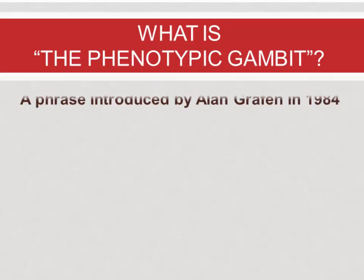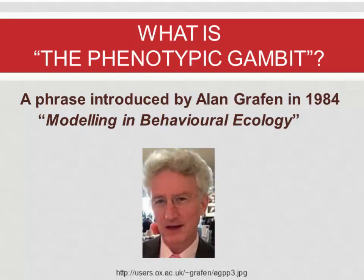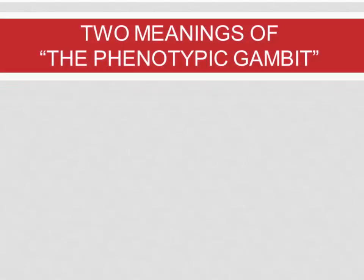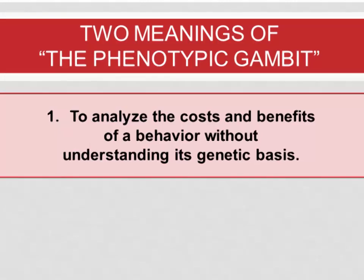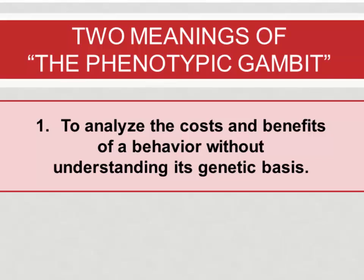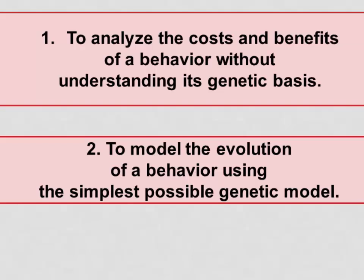So what is the phenotypic gambit? It's a phrase that Alan Graffin introduced in 1984 in an essay called 'Modeling in Behavioral Ecology.' There are two meanings he gives to it. The first is analyzing the costs and benefits of a behavior without understanding its genetic basis — focusing just on the behavior and its outcomes without knowing the genes that cause it, treating genetics as a proximate cause. The second is using the simplest possible genetic models when modeling the evolution of a behavior in order to keep things simple.